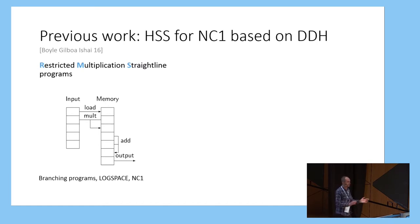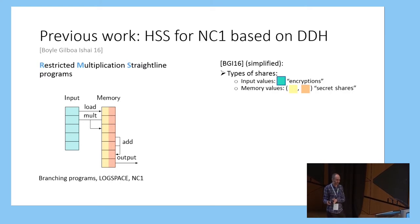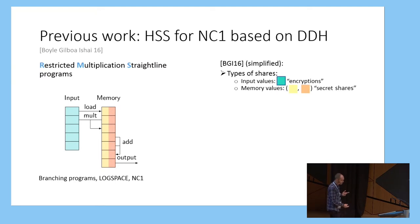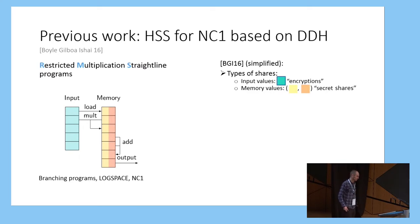In these programs, we have two different data types which can be divided into input values and memory values. In the DDH construction, the input values correspond to inputs of the program which are given in an encrypted form with some public ciphertext. For every memory value, these can be seen as intermediate computation values where the parties actually have some additive secret sharing of some representation of the underlying value. Whenever you see the yellow and red box on the slides, this indicates something is being additively secret shared.